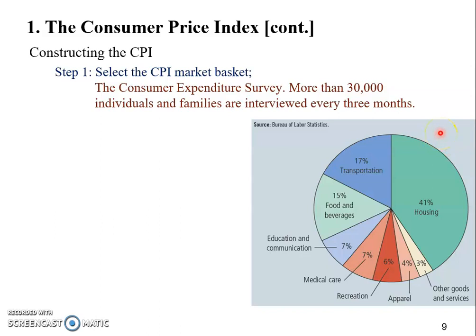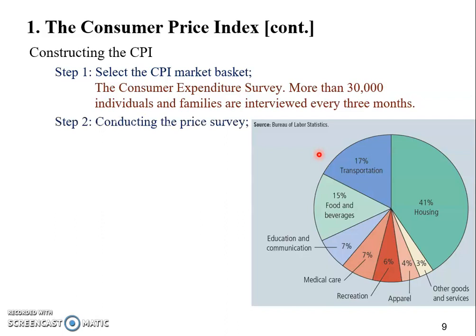This shows what items a typical American household actually spends money on. The largest component is housing — mortgage payments and rents. After housing comes transportation, then food and beverages, followed by education, communication, and medical care. As the coke quantity example demonstrated, we really have to do the expenditure survey to figure out the weights for each good or service in our fixed market basket. We cannot just use any numbers we want; we have to figure out how much people actually spend on different goods and services.